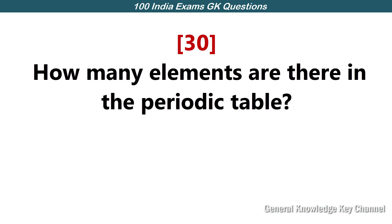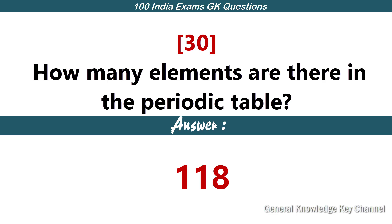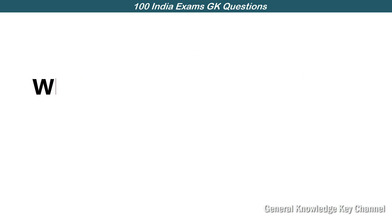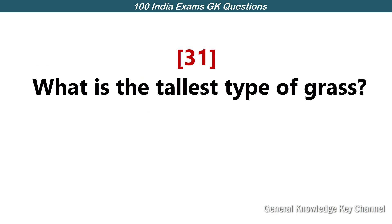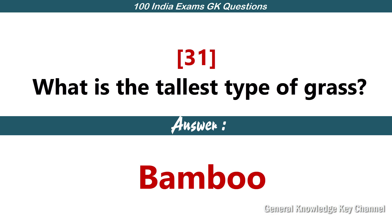How many elements are there in the periodic table? Answer: 118. What is the tallest type of grass? Answer: Bamboo.